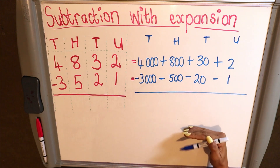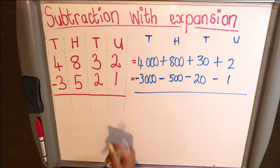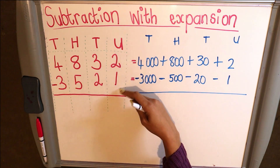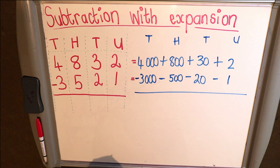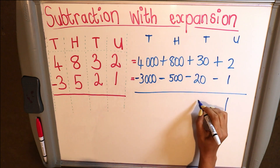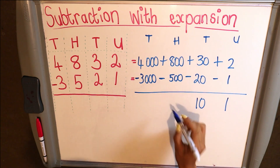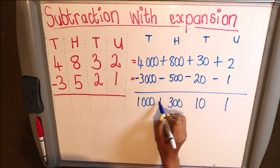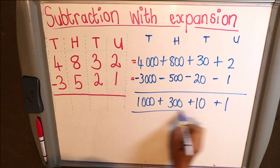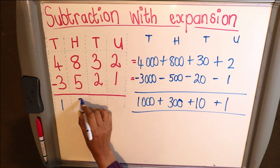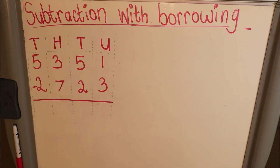The number one rule for subtraction is top minus bottom, starting from your right. So top minus bottom: two minus one is one; thirty minus twenty is ten; eight hundred minus five hundred is three hundred; and four thousand minus three thousand is one thousand. Adding all of this up gives my final answer: one thousand three hundred and eleven.